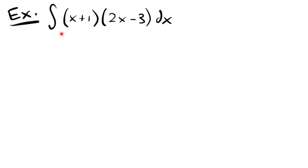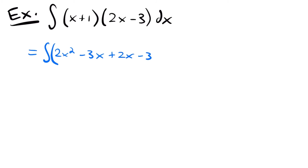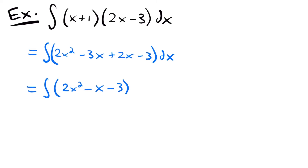Let's look at another example. We have the integral of the quantity x plus 1 times the quantity 2x minus 3. To do this integral, we need to FOIL the terms. So we'll have 2x squared, then x times negative 3 gives minus 3x, then 1 times 2x gives plus 2x, and 1 times negative 3 gives negative 3. Adding the like terms negative 3x and 2x, this becomes the integral of 2x squared minus x minus 3 dx.